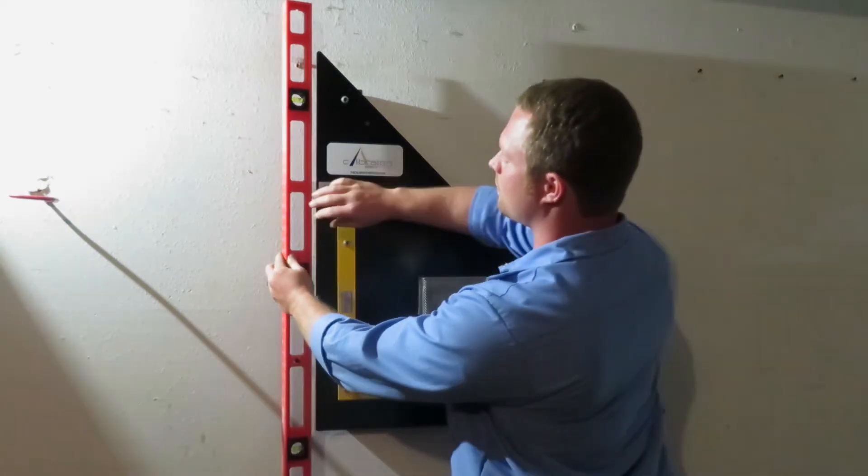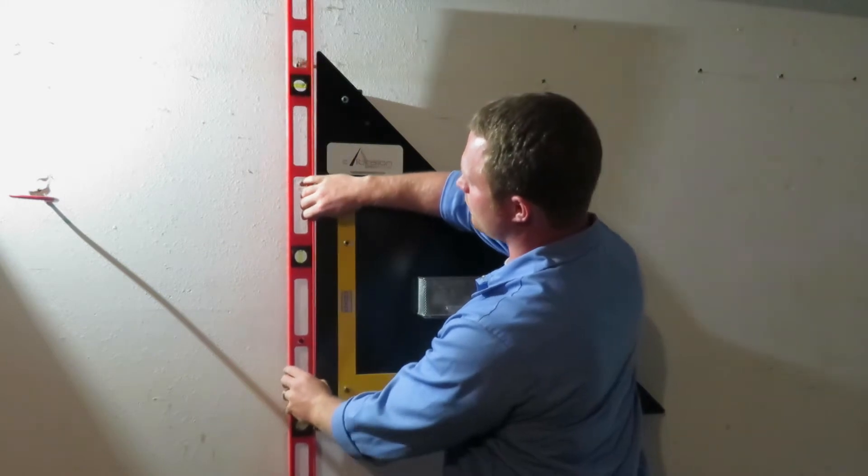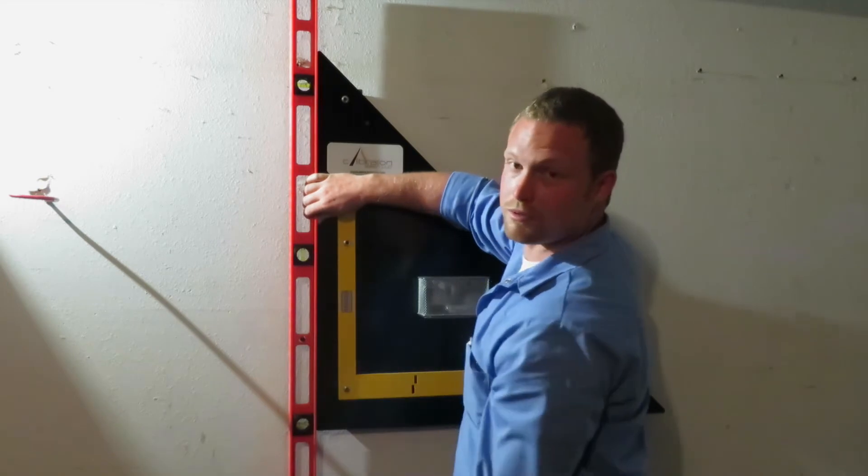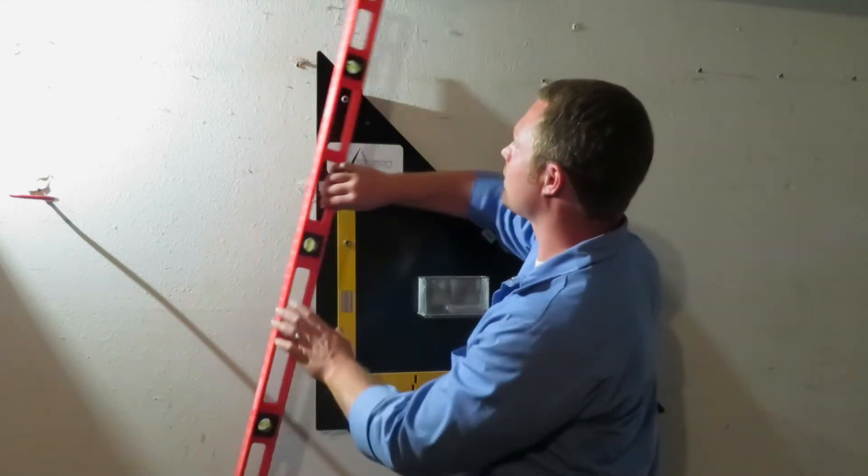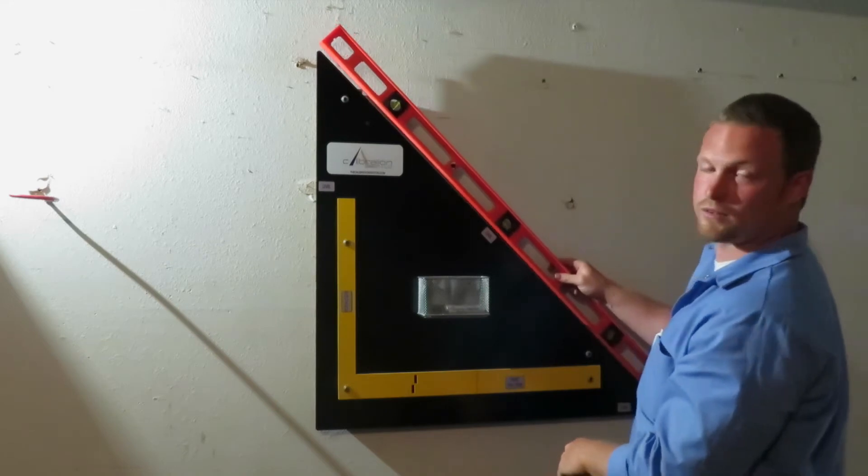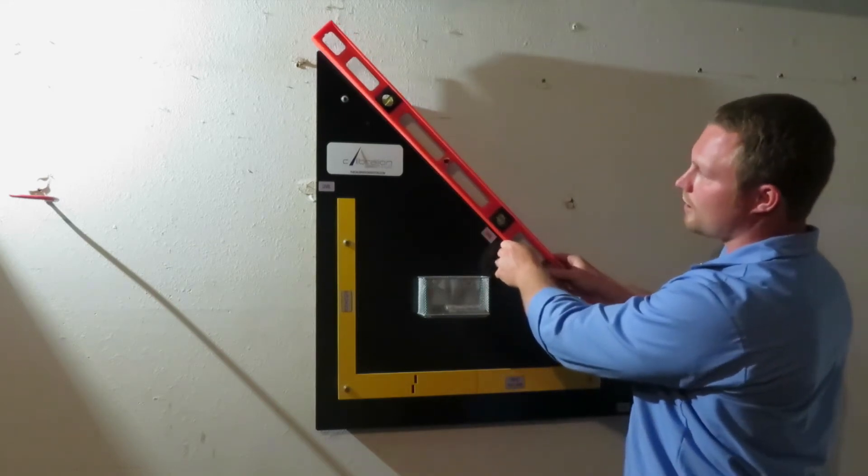And then same thing for the vertical level. Place it against the metal plate here and confirm that the bubble is within your specifications. Then you'll put it on the 45. This level doesn't actually have a 45, but the idea is the same.